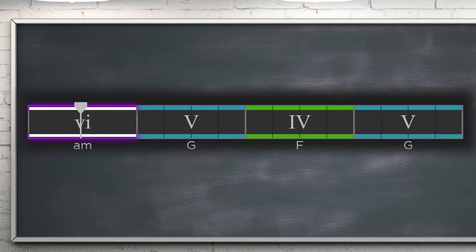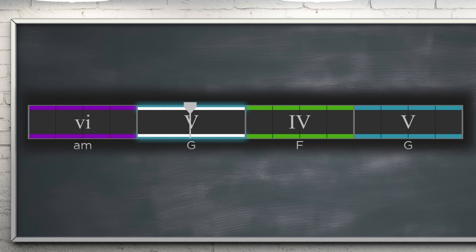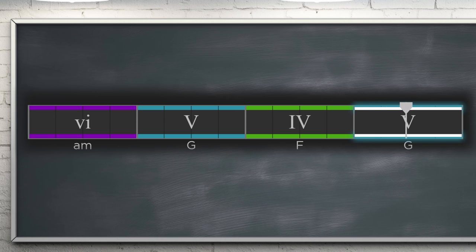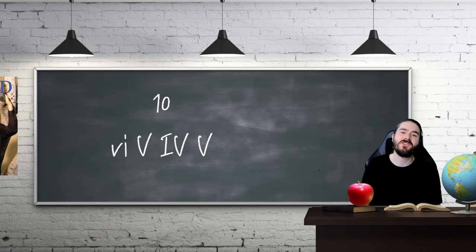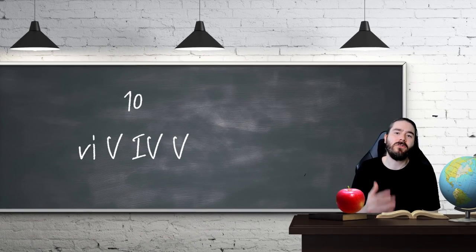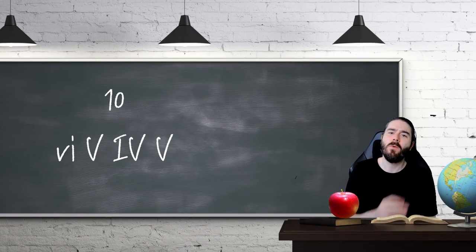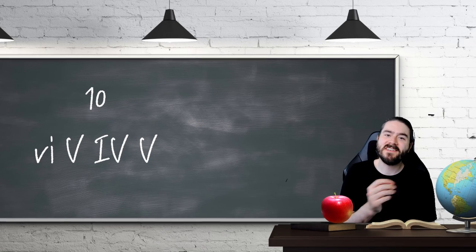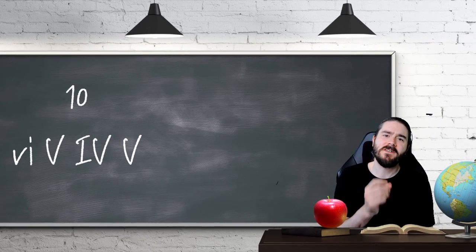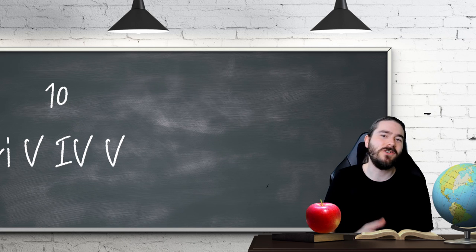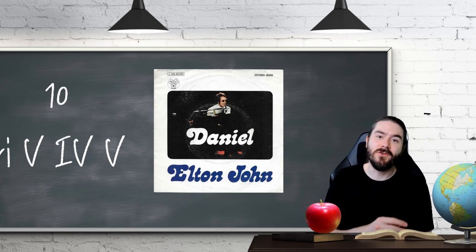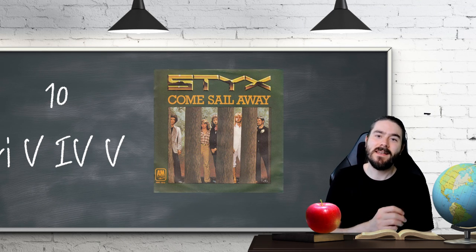At number 10 is 6-5-4-5. This is the first time we've seen a progression not start with the one chord. This might be part of a song section that takes the listener on a journey away from the one chord, or an extended chord progression. Think about denying your listeners the stability of the one chord to provide a different feel to your songs. Examples include Daniel by Elton John and Come Sail Away by Styx.